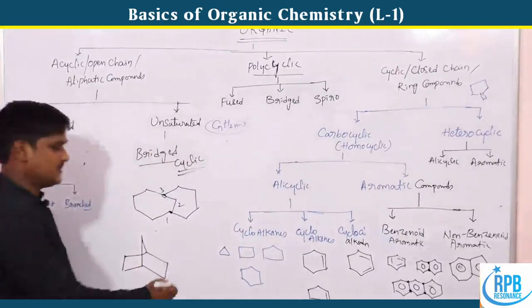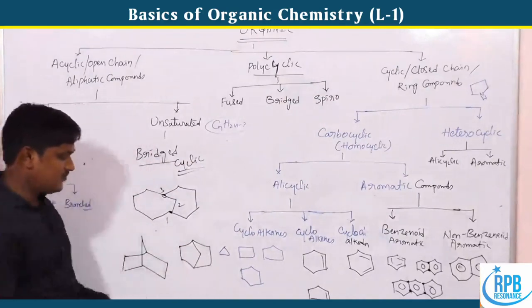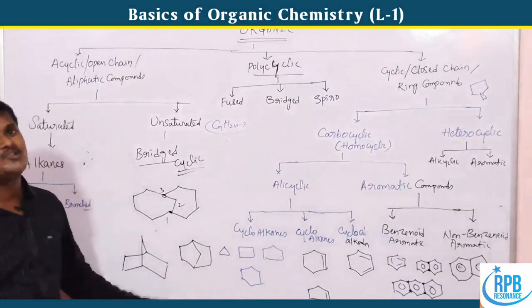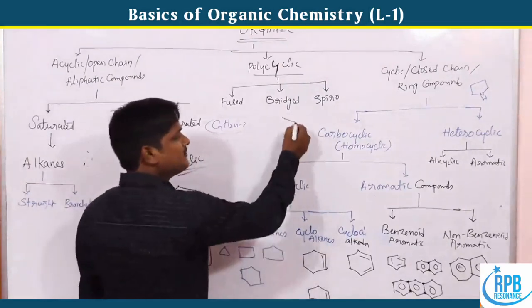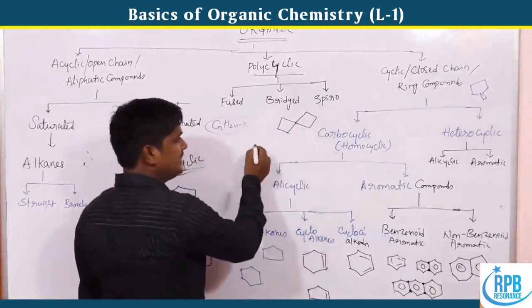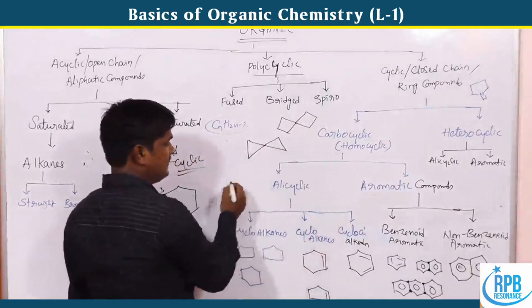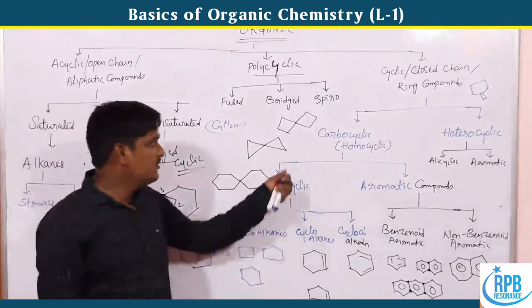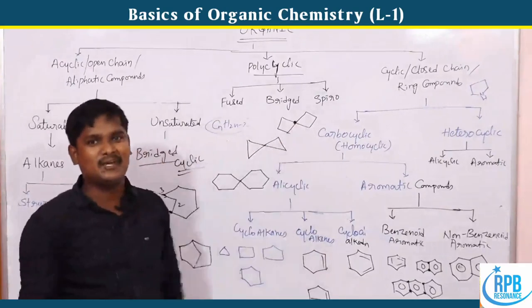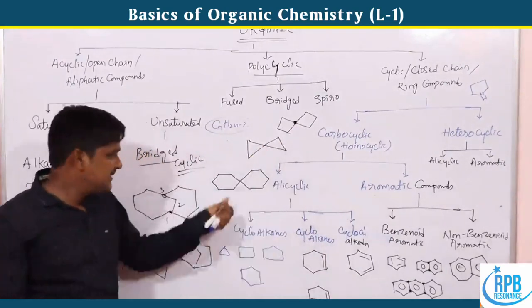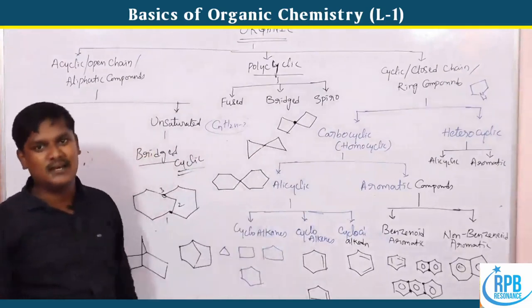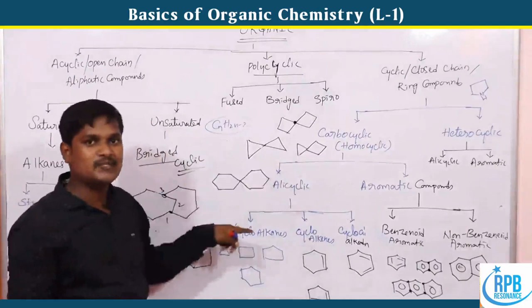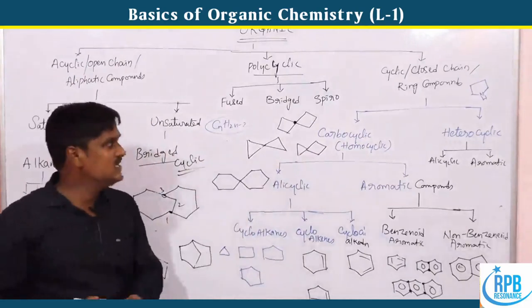Finally, spiro compounds — in spiro compounds, a single carbon atom connects two different rings. One single carbon atom is shared between two rings. For example, two three-membered rings or two six-membered rings connected through one single carbon atom are all spiro compounds.